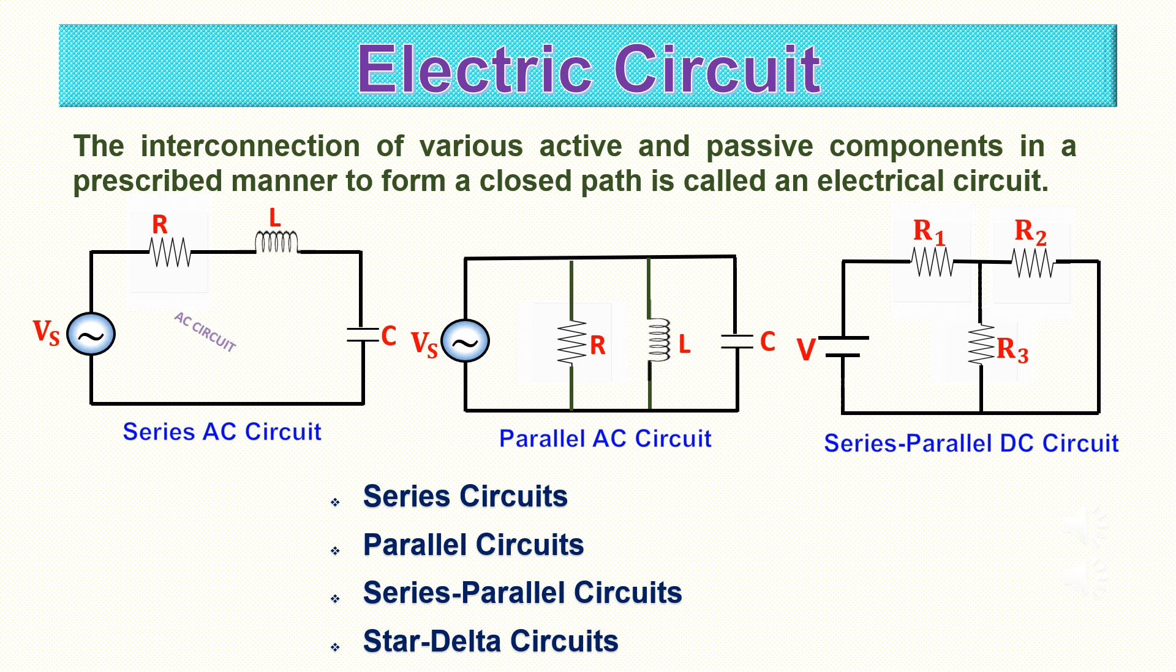In general, the circuit elements can be connected in four ways. Based on that, the electric circuits are classified as series circuits, parallel circuits, series-parallel circuits, and star-delta circuits. In series circuits, all the circuit elements are connected in series. In parallel circuits, all the circuit elements are connected in parallel. The combination of series and parallel circuits is called series-parallel circuit. Star-delta circuit is not series or parallel nor series-parallel circuit.